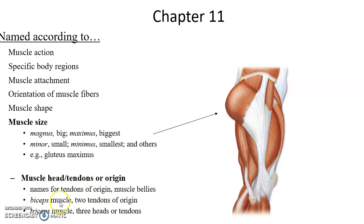Muscles can also be named based on their number of origins. The biceps brachii — biceps — has two origins. The triceps brachii — triceps — has three origins.